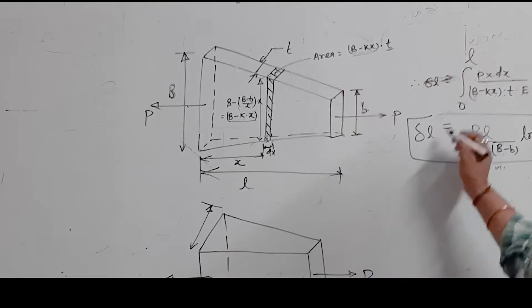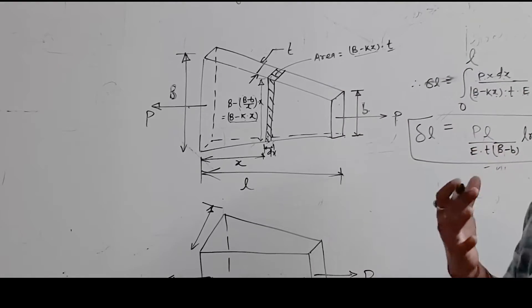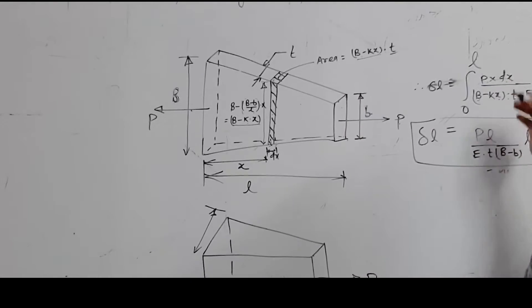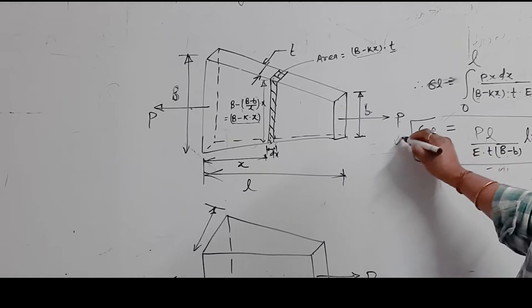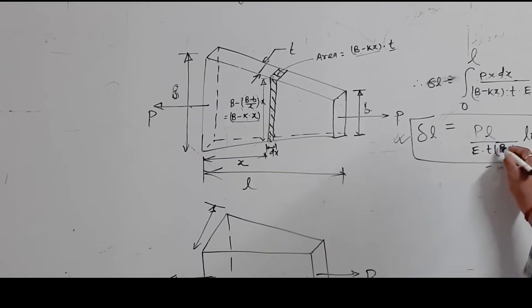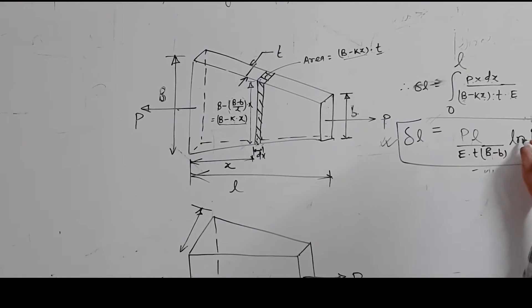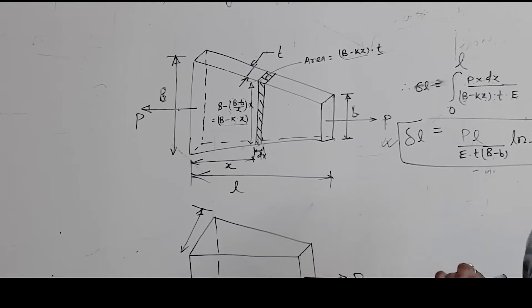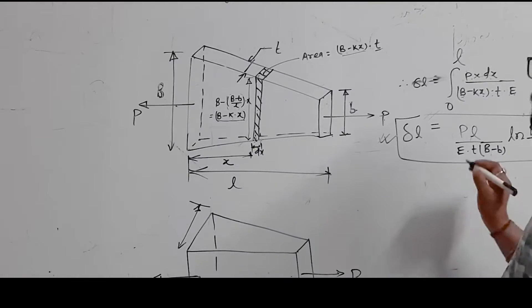If you solve and integrate it, finally you will get the standard result: PL divided by (ET) times (capital B minus small b) times natural log of (B by b).